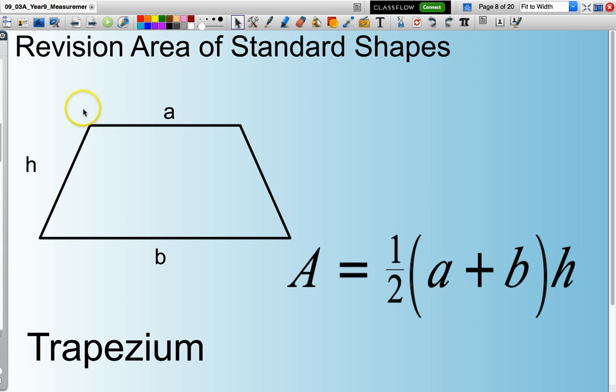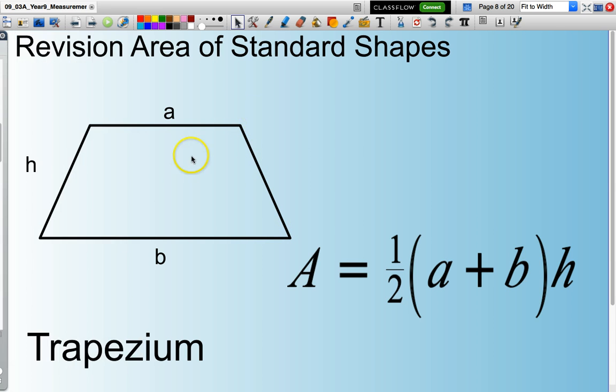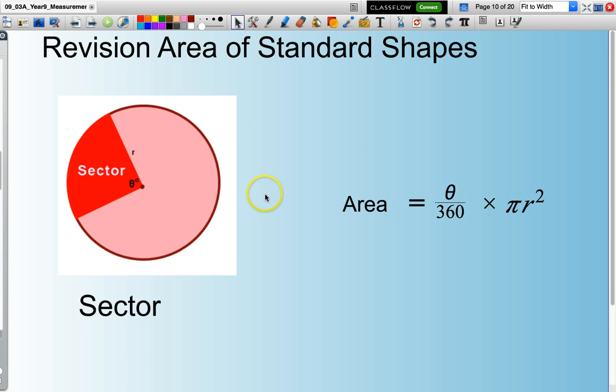The area of a trapezium is one-half times the length of a plus the length of b multiplied by the height. The area of a circle is pi multiplied by the radius squared. The area of a sector is theta over 360 multiplied by pi r squared.